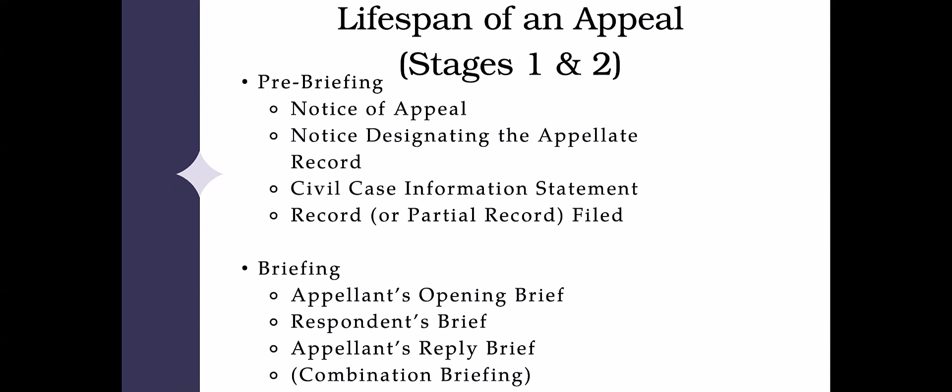In the pre-briefing stage, you have the notice of appeal, which is filed in the trial court where the case has been tried. The other document filed in the trial court is the notice designating the appellate record. Both are judicial forms that streamline the beginning of the appeal. The notice of appeal is a one-page document — very simple — you just identify what order or judgment is being appealed. The notice designating the appellate record, however, requires a little more thought.